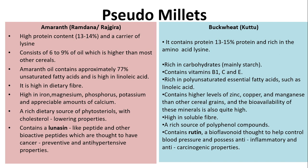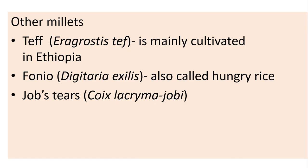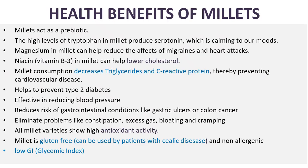In amaranth, it contains a lunasin-like peptide and other bioactive peptides. In buckwheat, it contains rutin, a bioflavonoid. Other millets include teff, mainly cultivated in Ethiopia; Neodigi taria exilis, also called hungry rice; and Job's tears (Coix lacryma-jobi).